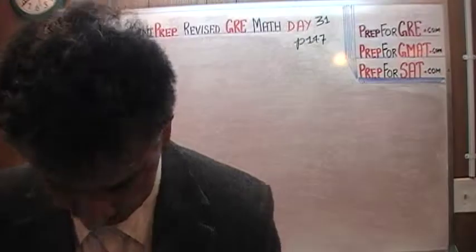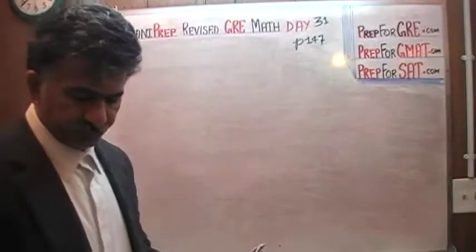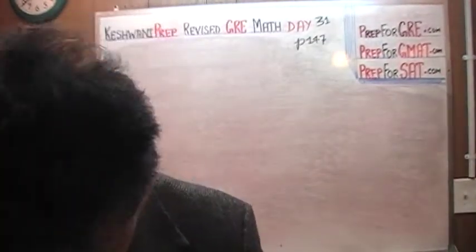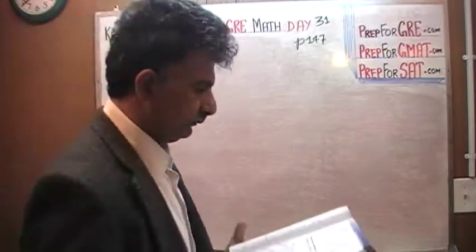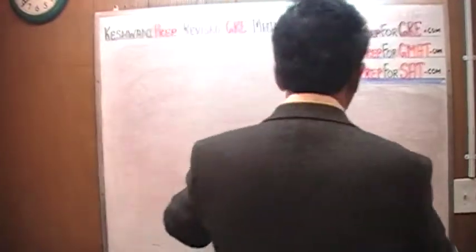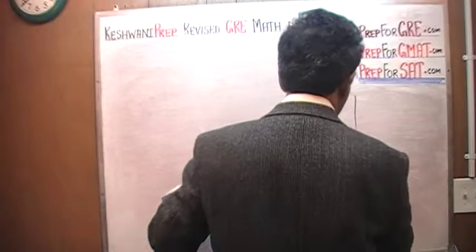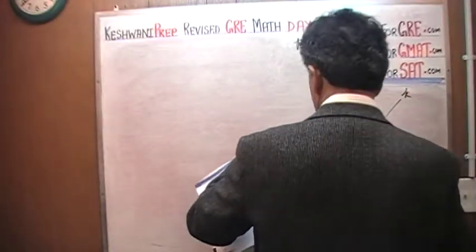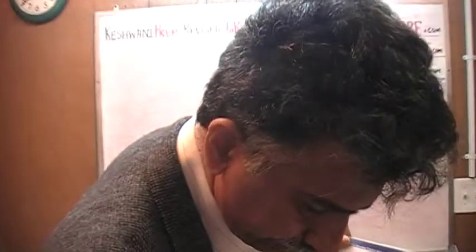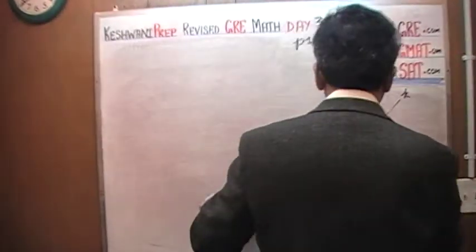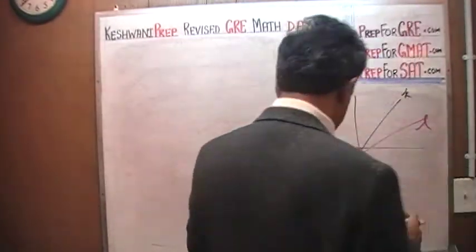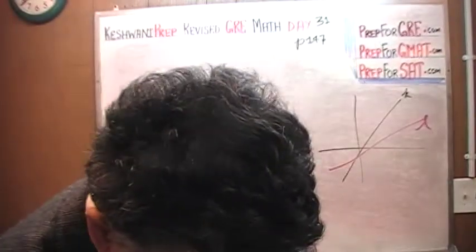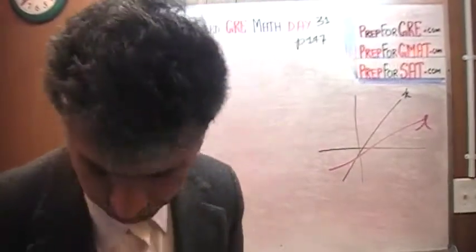Let's take a look at it. It's a very straightforward, very simple problem on page 147. We are given a graph that looks something like this — line K and then we have line L. We are simply being asked to compare the slope of the lines. As I said, it's a very straightforward problem; there is nothing to it.